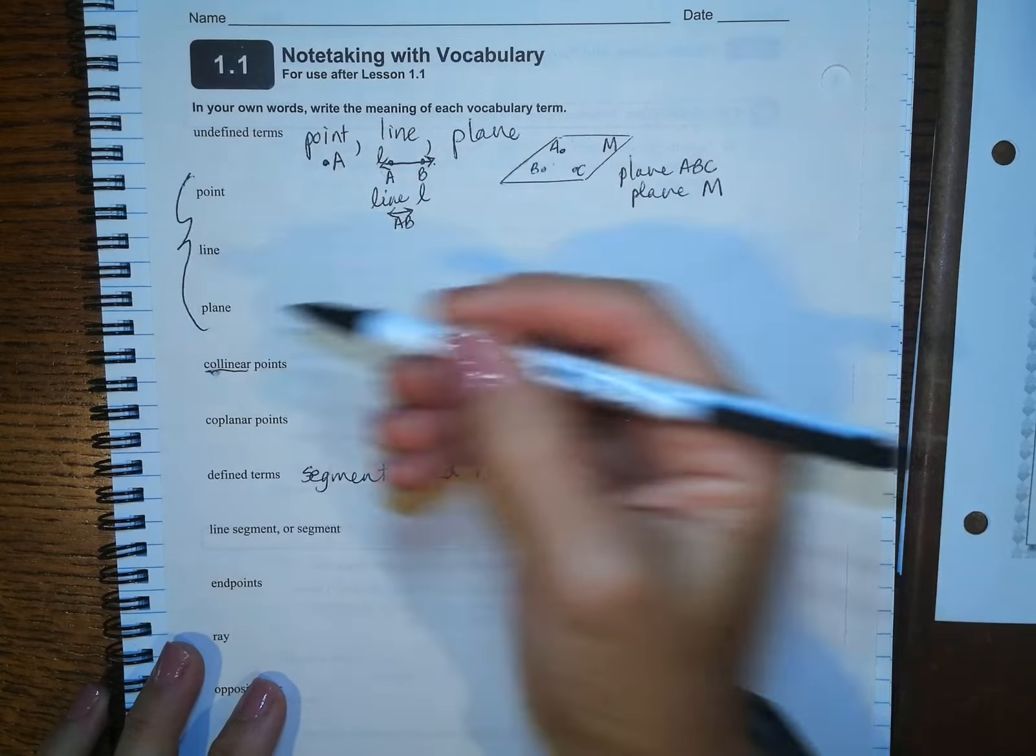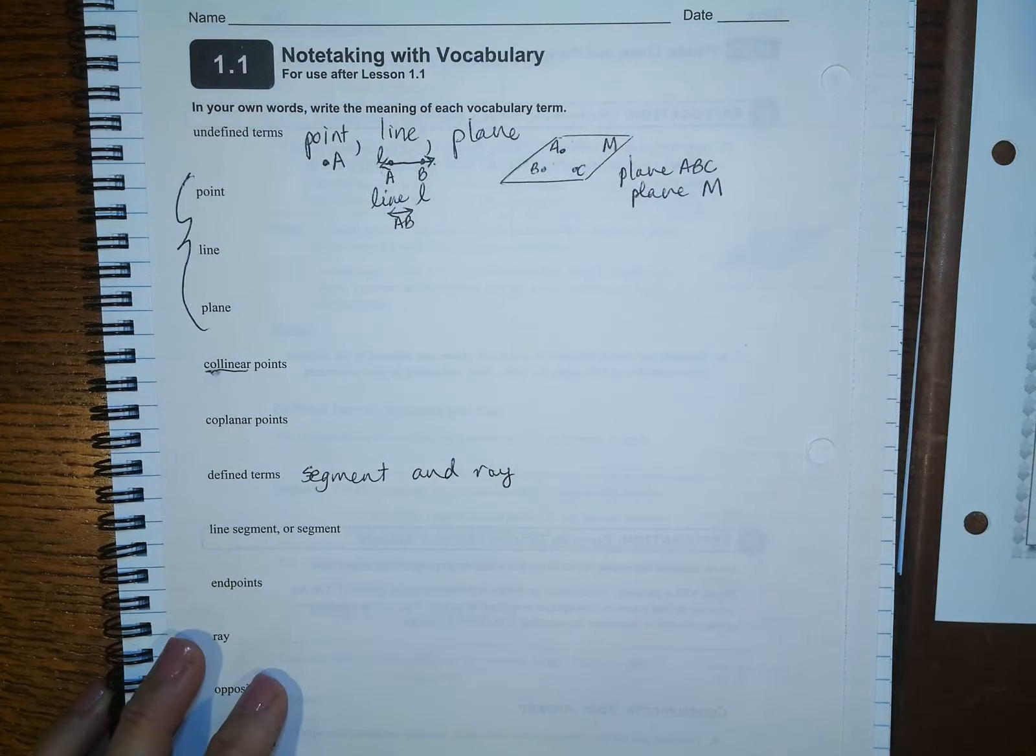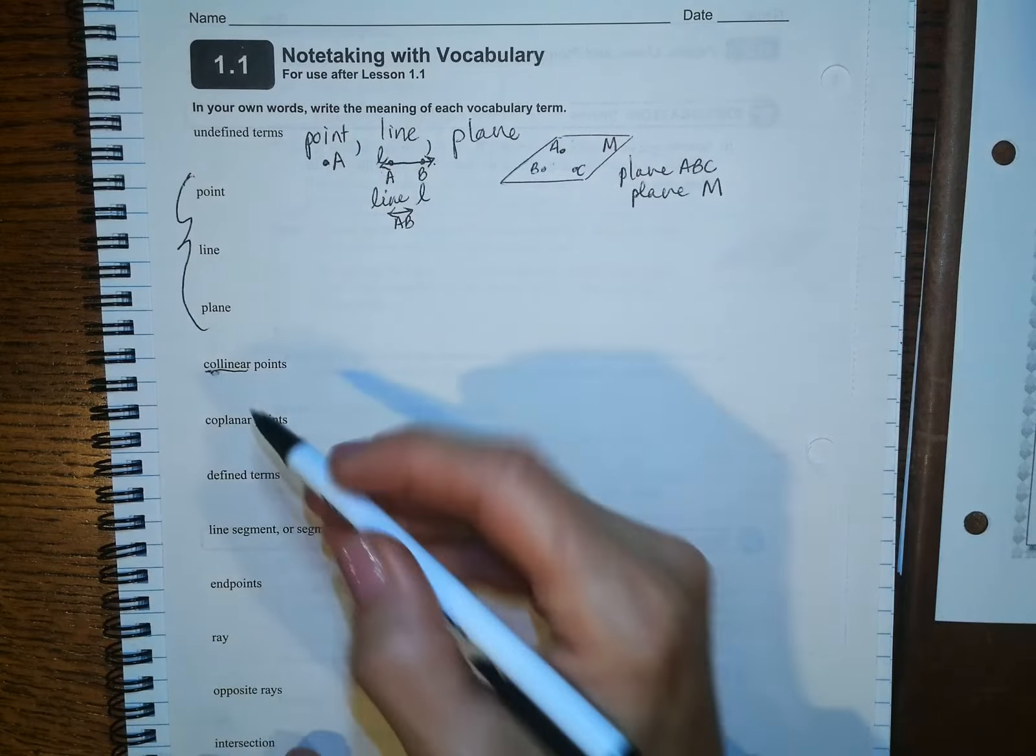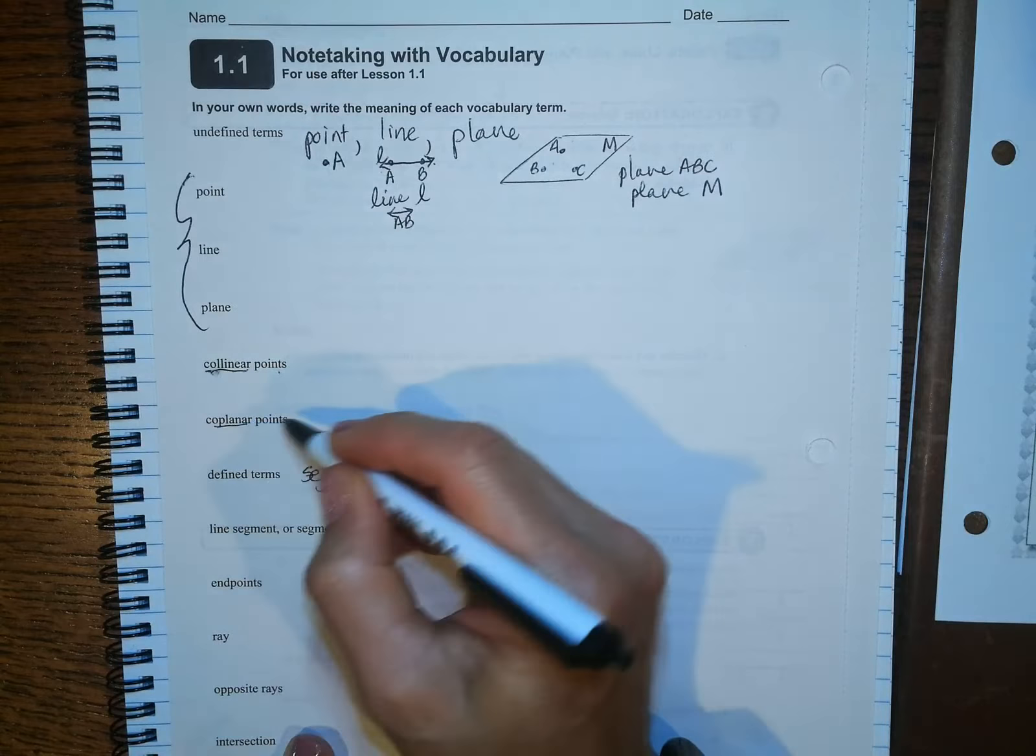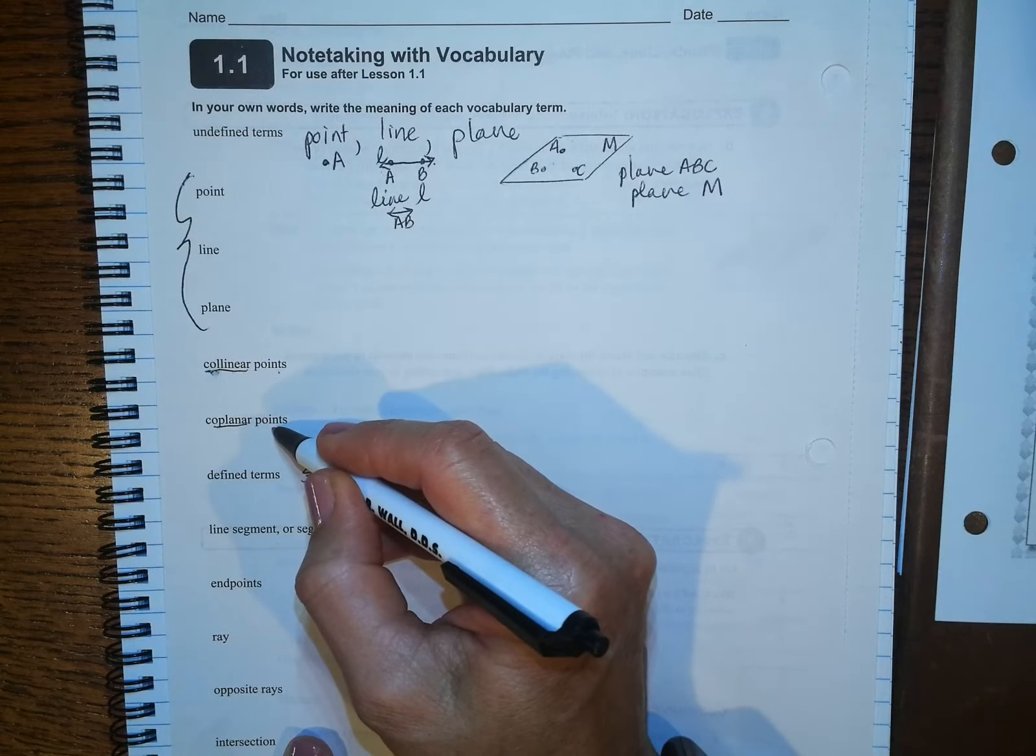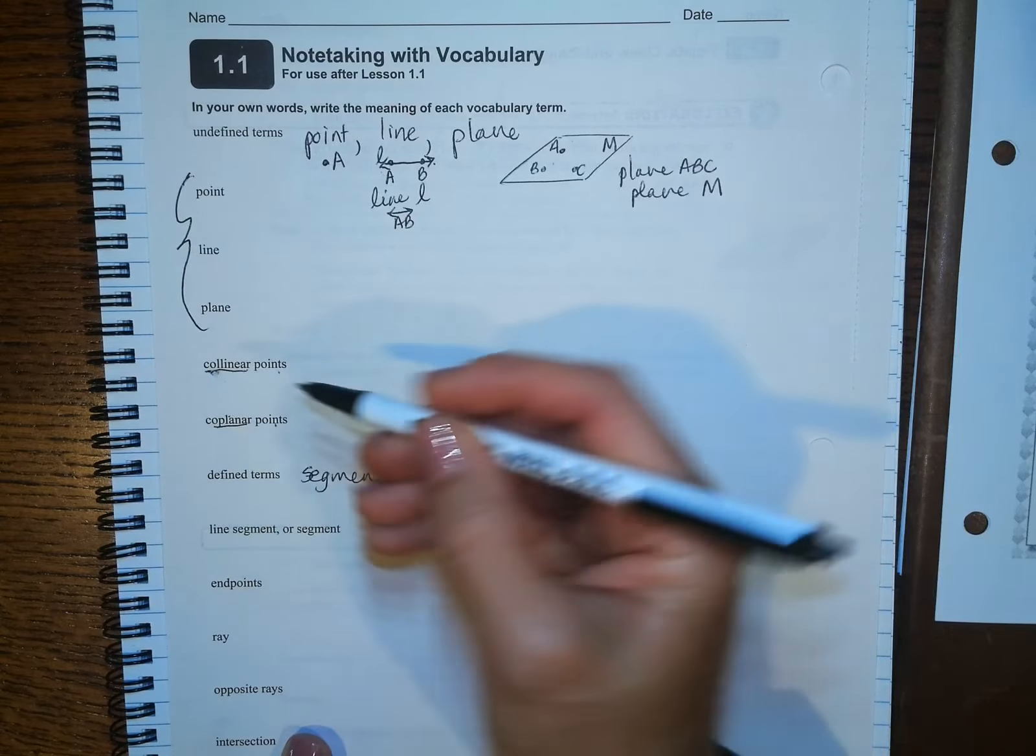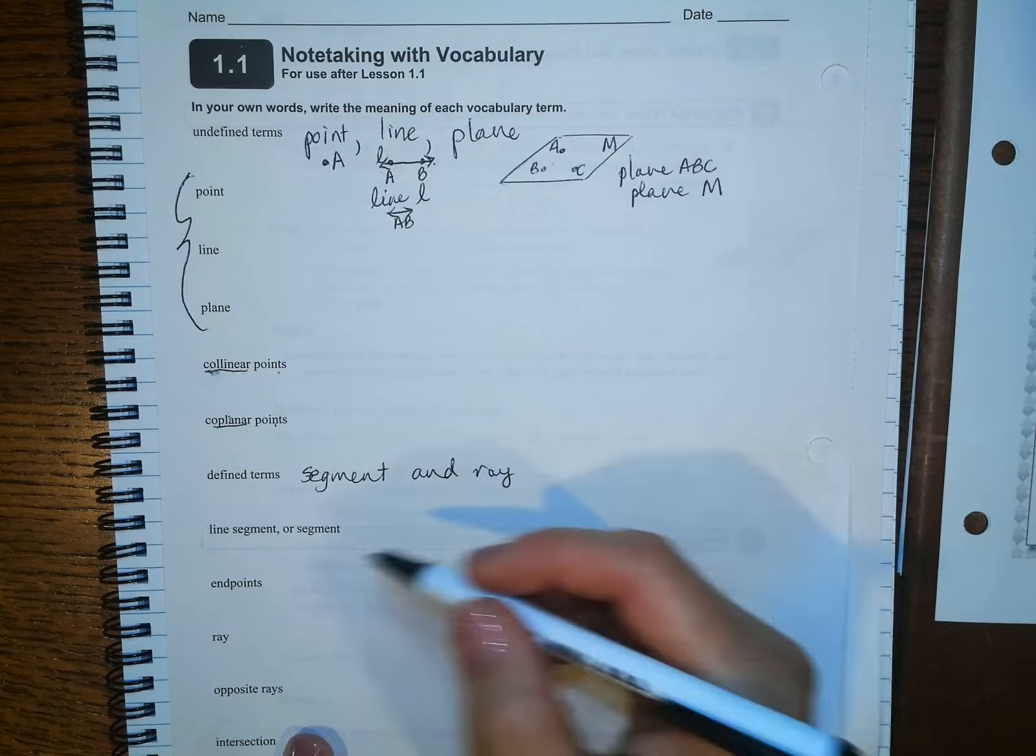Collinear points means two points on the same line. Collinear points on the same line. Coplanar points are points on the same plane. And there has to be at least three of those.